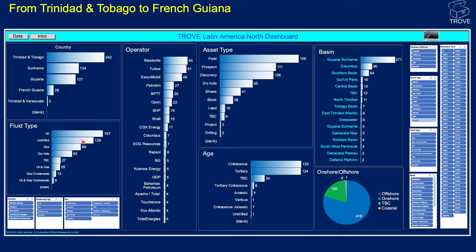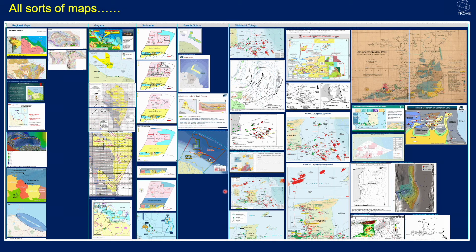We have the operators, the fluid types, and a total of 156 fields — many of which are onshore Trinidad and Tobago, with only a few developed in offshore regions. We have 111 prospects with detailed information, 106 discoveries in a variety of basins predominantly Cretaceous and Tertiary in age. We also have lots of maps to inspire geoscientists, and oil concession maps going back to 1918 for onshore Trinidad, with a lot more recent maps as well. This is just a portion of what's held within this database.